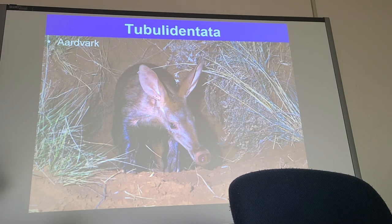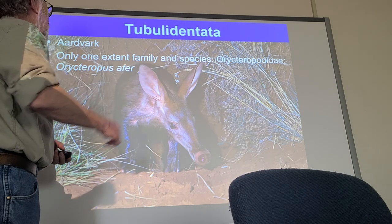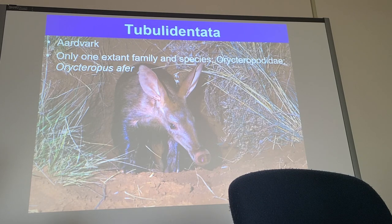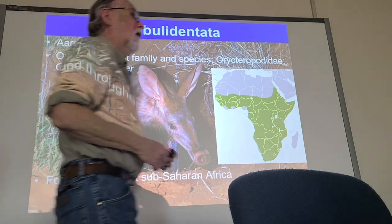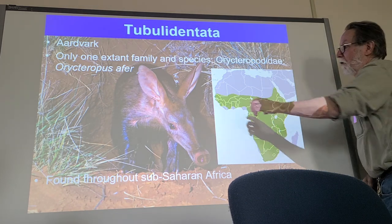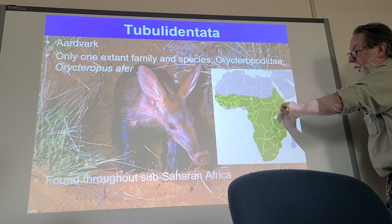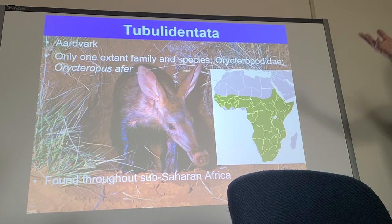Aardvark is one of the first words in the dictionary. It's an Afrikaans term derived from Dutch, meaning 'earth pig.' The only family is Orycteropodidae, and the one species is Orycteropus afer. Unlike the other groups — where Afrosoricids were concentrated in certain areas and Macroscelidids over in another — aardvarks are found anywhere in the Afrotropical region. They're very successful throughout Sub-Saharan Africa, though they never made it to Madagascar.